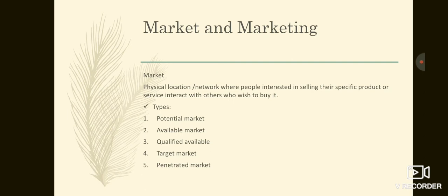The last one is penetrated market. Penetrated market includes those in the target market who actually purchase the product. For example, if teenagers are targeted for smartphones, they are the target market. But among those teenagers who actually buy the mobile — those who are capable and have the requirement to buy — they form the penetrated market. These are the different types of markets.